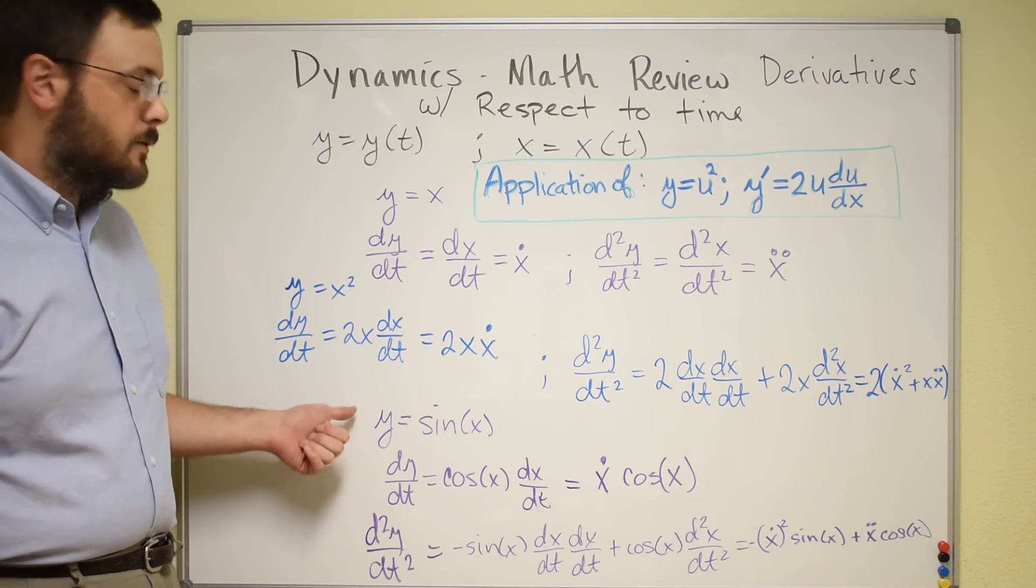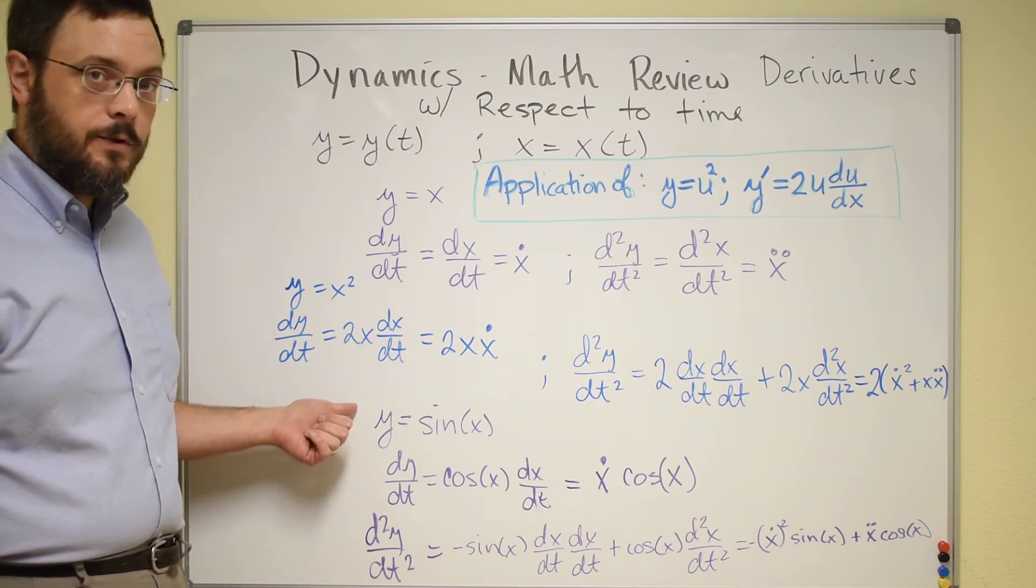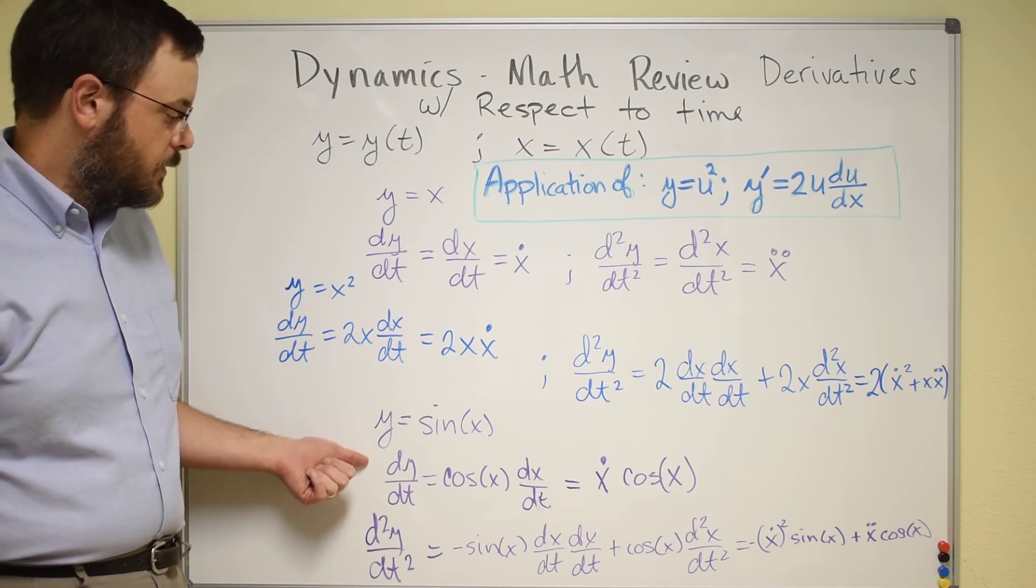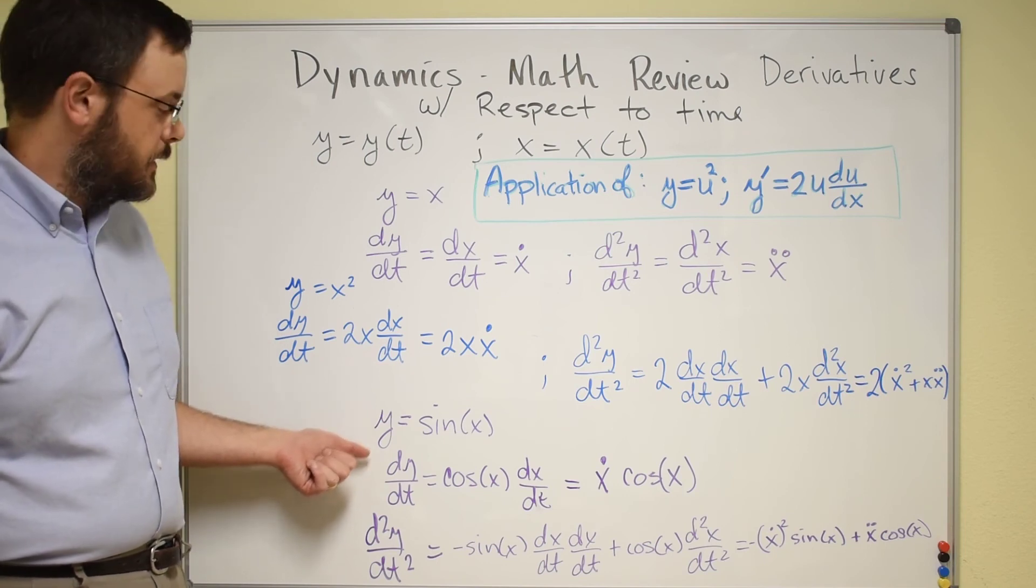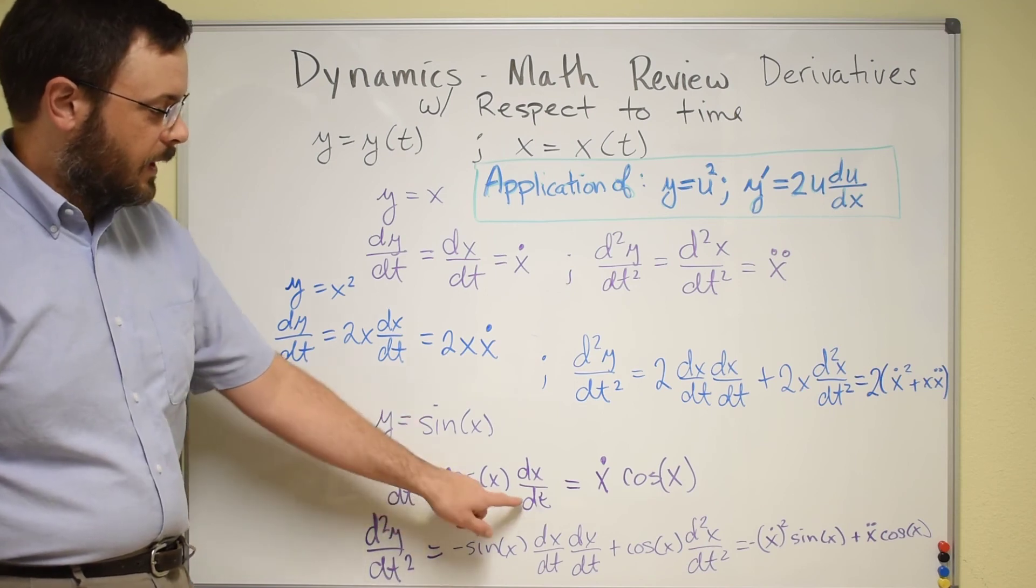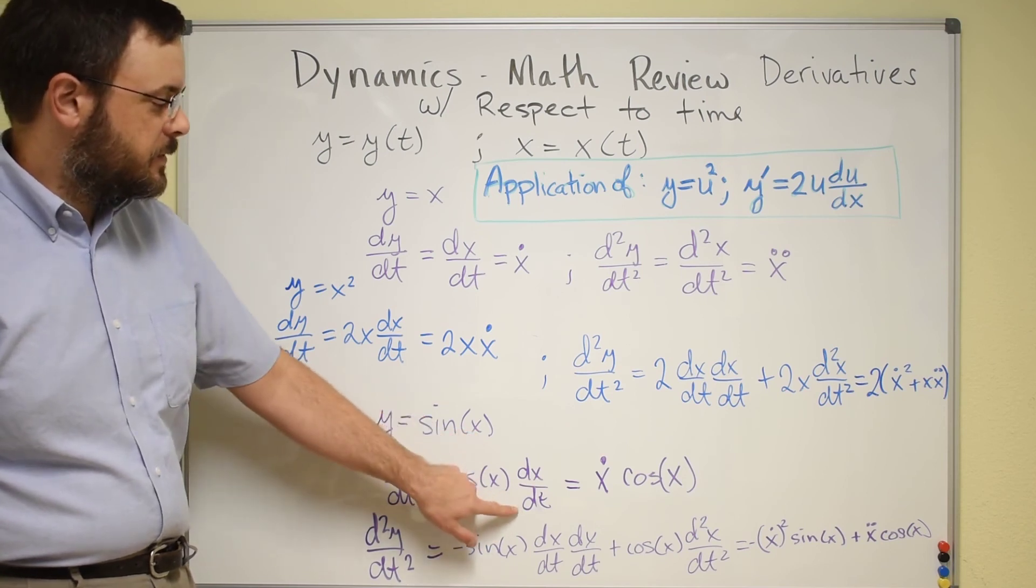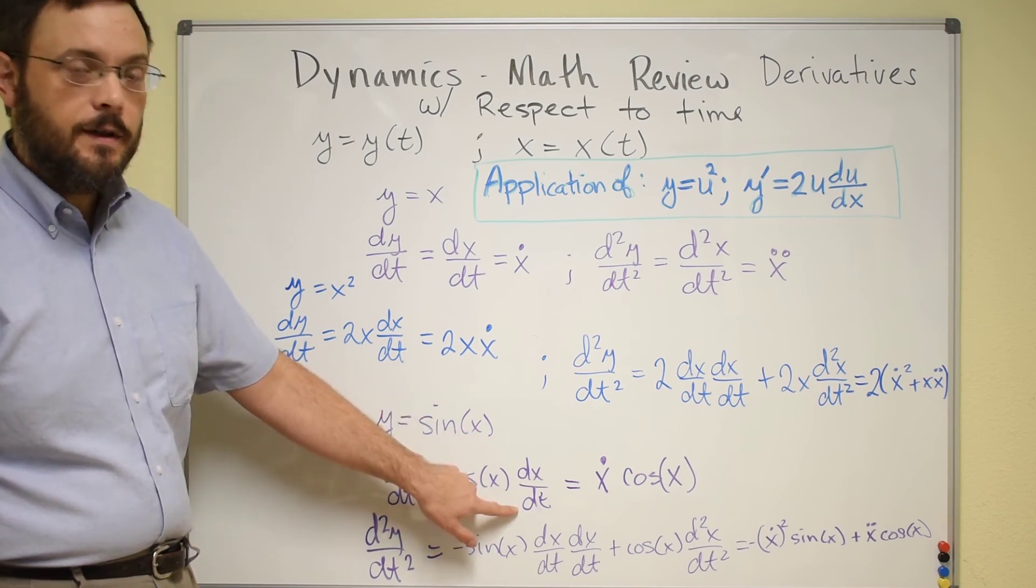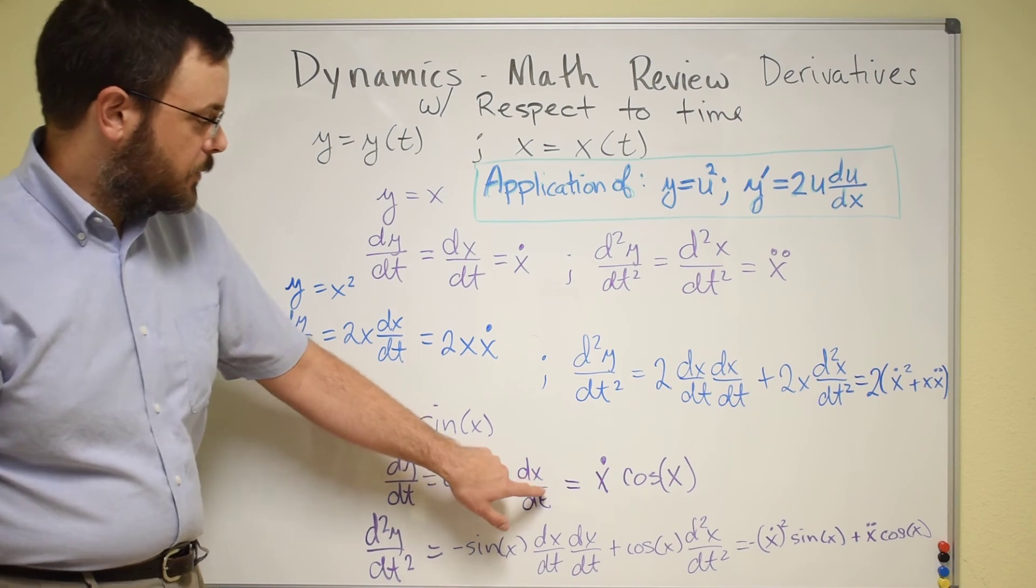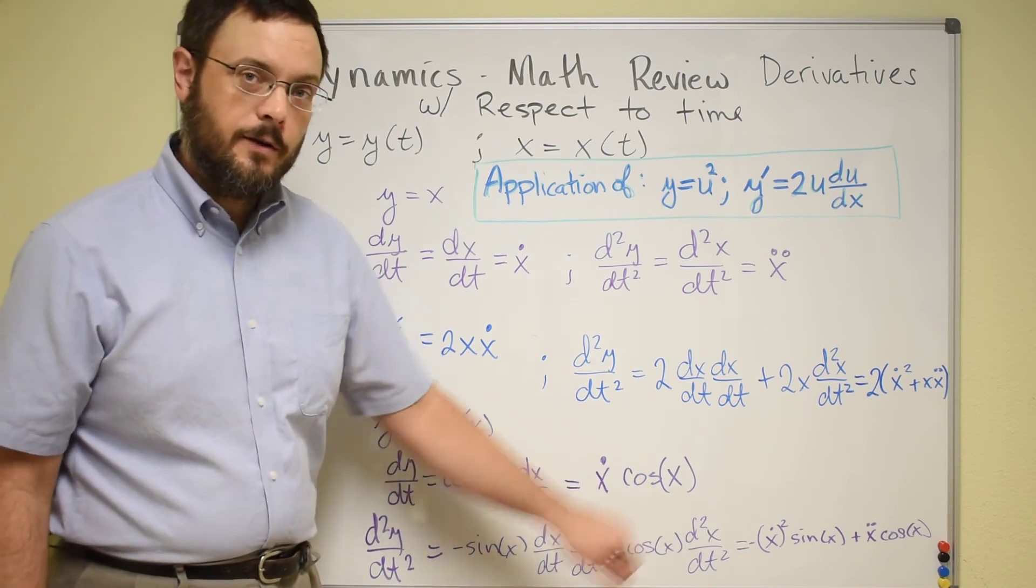dy/dt is going to give us, derivative of sine would give us cosine. We're still going to have the derivative of the variable that sits in here with respect to time, so that gives us dx/dt. And if we pull that term out in front, we get ẋ cosine of x.